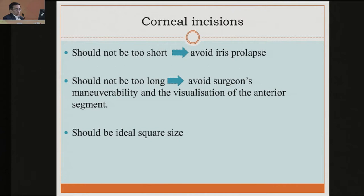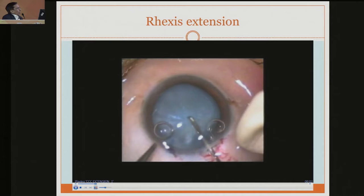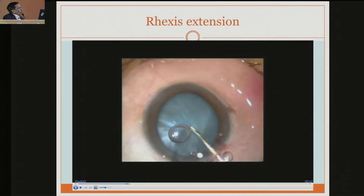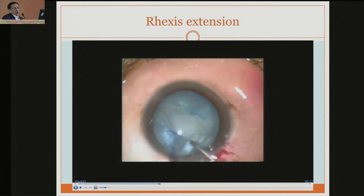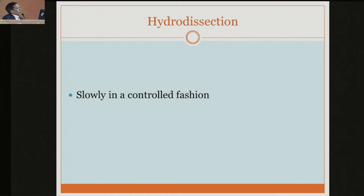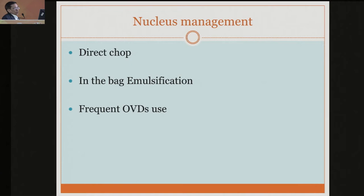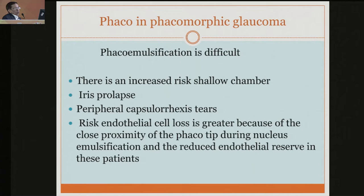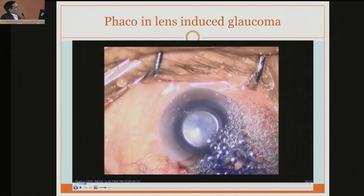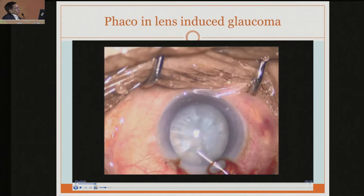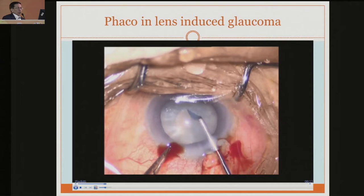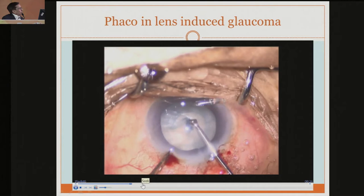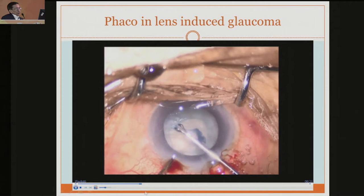For the rhexis in a shallow chamber - what are the options and why is it difficult? We have taken all viscoelastic and once you go in, because of the posterior pressure, the rhexis tends to go out. These are the few problems with the shallow chamber. Direct chop, as mentioned, and good emulsification technique is necessary. Use frequent viscoelastic - especially Viscoat is much more helpful because it doesn't come out. You should use good viscoelastic and a well-planned rhexis, using viscoelastic in between the rhexis procedure also.